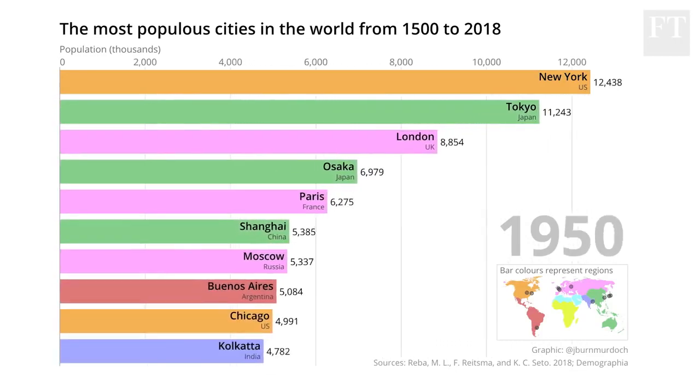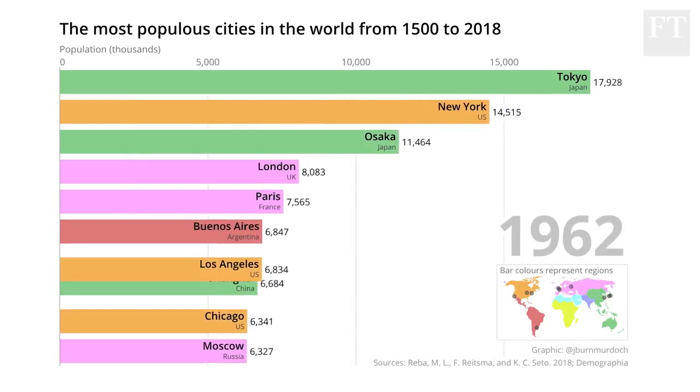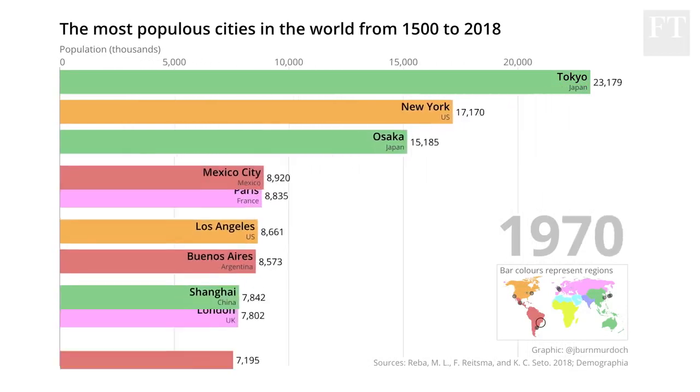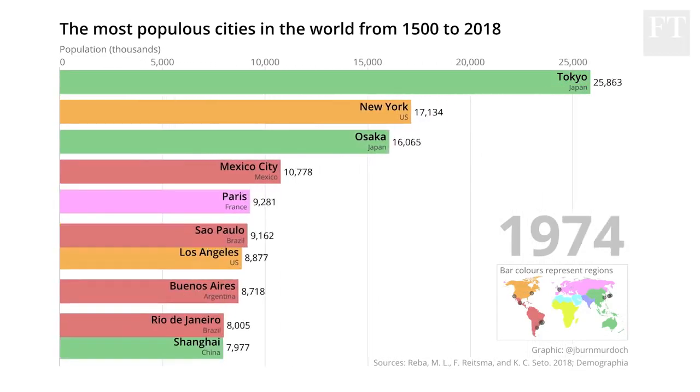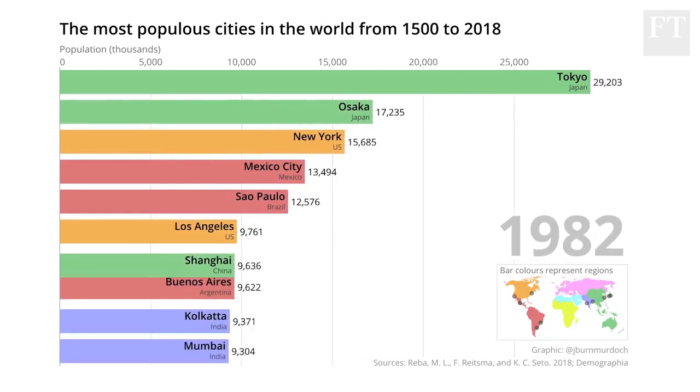After the Second World War Tokyo's population is around 10 million, but it doubled to 20 million within only about another 20 years, and then soon hits 30 million.